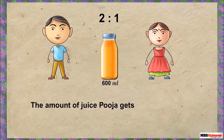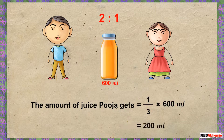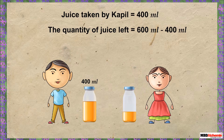Similarly, the amount of juice Puja gets is equal to the second term divided by the sum of both terms, multiplied by the whole quantity of juice. That is: 1 divided by 3, multiplied by 600 ml, which equals 200 ml.